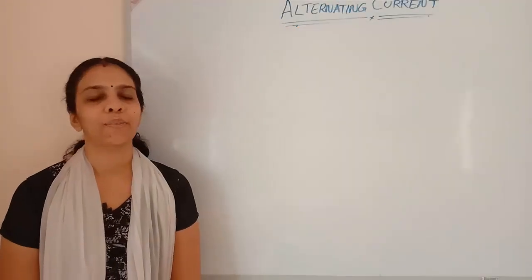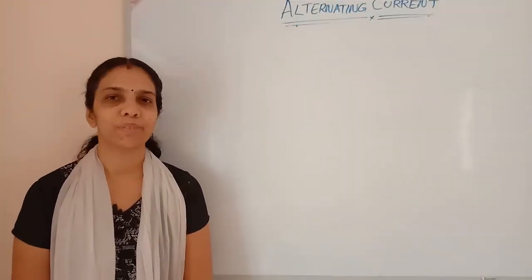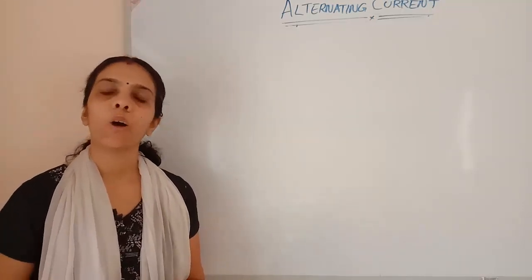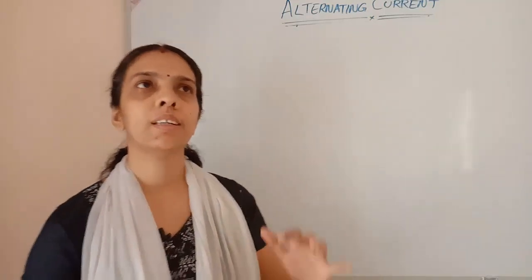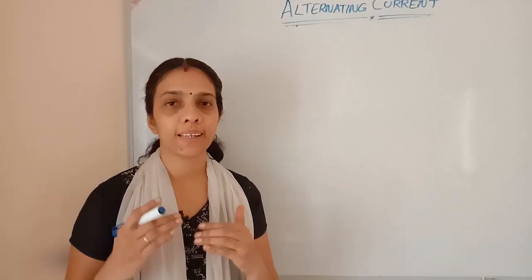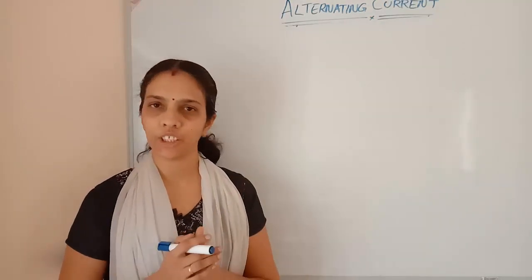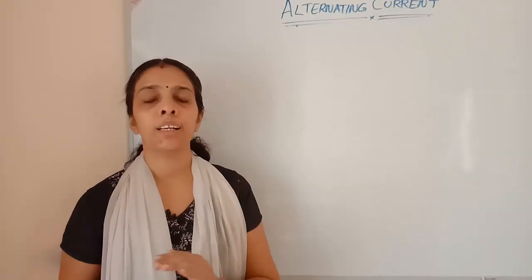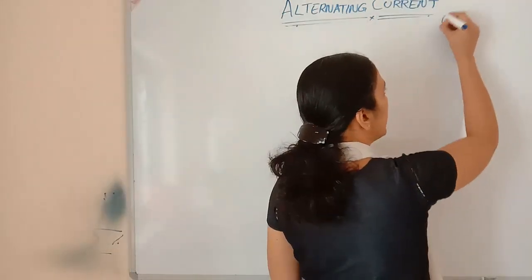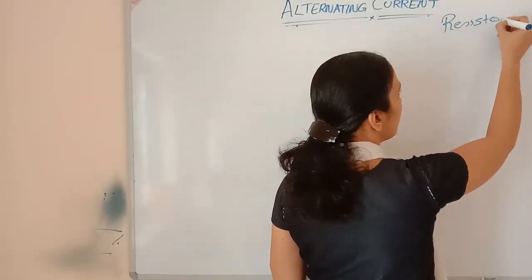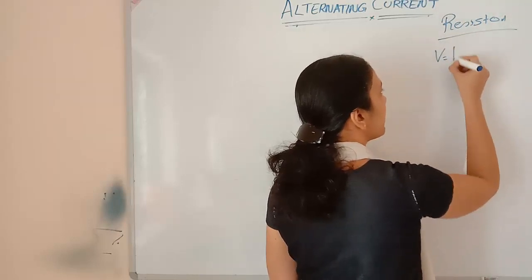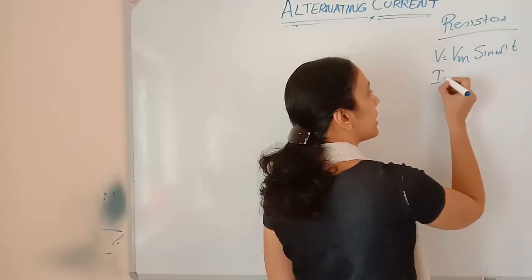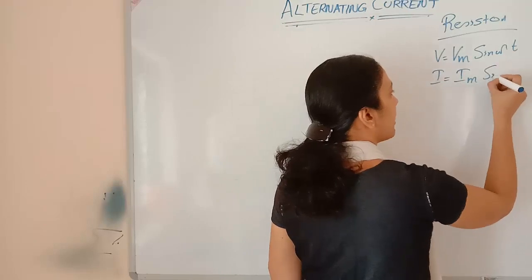Hello, dear students, welcome back to Learn Physics. In today's topic we are continuing with alternating current. We already learned about the AC source applied to a resistor — how V and I will be changing. Both are in phase, no change at all. If we apply a voltage V equals Vm sin(ωt), we get the current as Im sin(ωt).